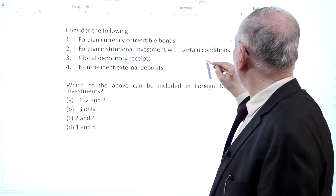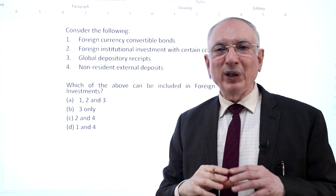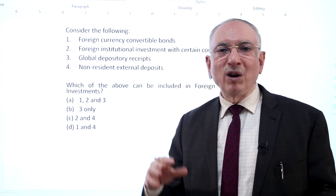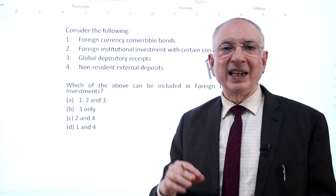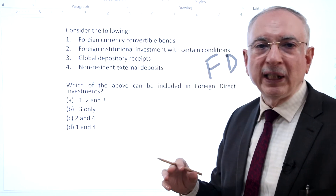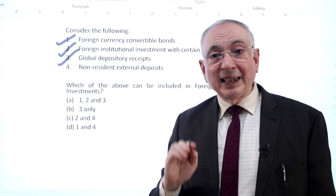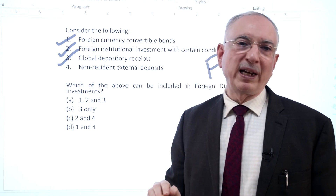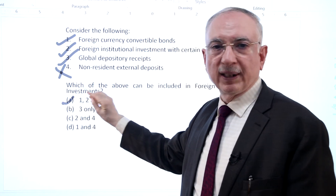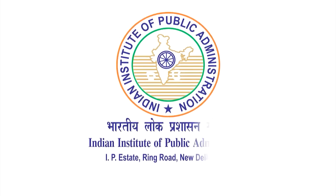This question revolves around components of FDI — foreign direct investment. In the capital account of balance of payments, we can classify into investment, borrowing, and external assistance. Foreign currency convertible bonds (FCCB), foreign institutional investment under certain conditions, and global depository receipts are instruments for foreign direct investment in India. Hence statements 1, 2, and 3 are correct. Non-resident external deposits are a debt-creating flow in balance of payment accounts and therefore not part of FDI. Hence statement 4 is incorrect and must be eliminated. So option A is the right answer.